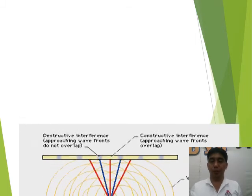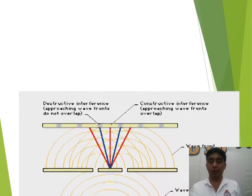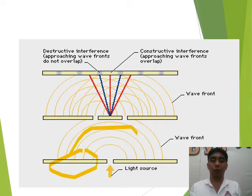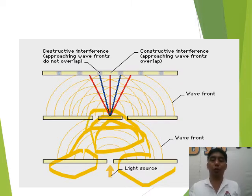Another behavior of light is called interference. Interference occurs when one source of light emits its light in one direction and another source of light emits in another direction, and the two interfere somewhere in between — that is why it is called interference behavior.